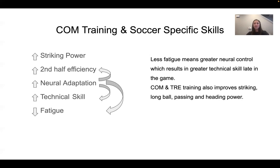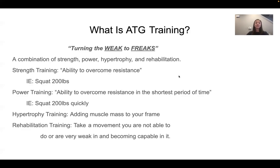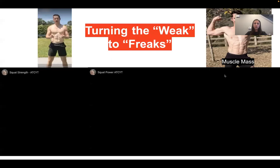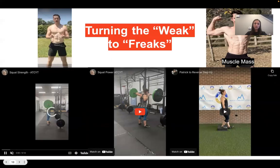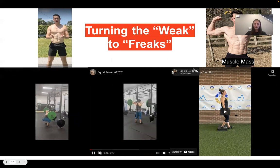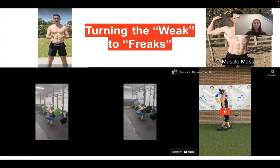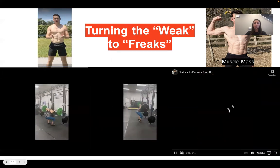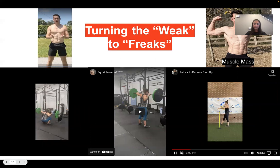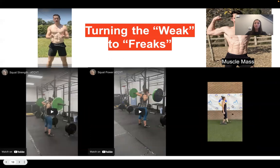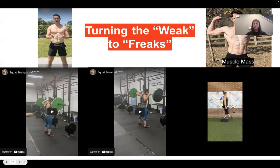Combination and traditional resistance exercise training also improves striking, long ball passing, and heading power. ATG training is turning the weak into freaks — it can be strength, power, hypertrophy, and rehab training. Strength is the ability to overcome resistance, while power is strength done quickly. Hypertrophy is adding muscle mass to your frame, and rehab is progressing you from a movement you can't do — or one done with assistance — to doing it really well, or going from doing it with pain to doing it with no pain.